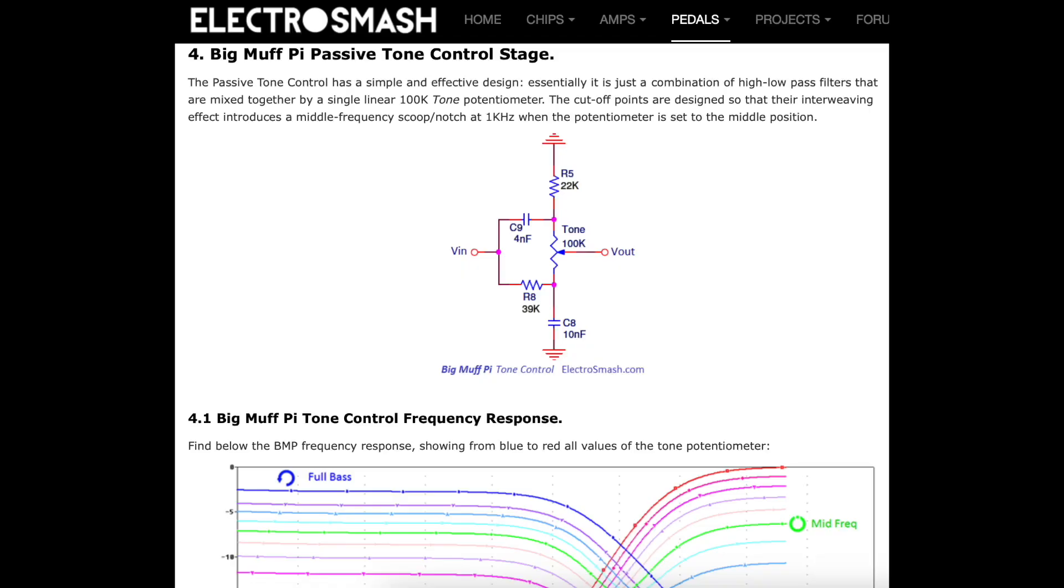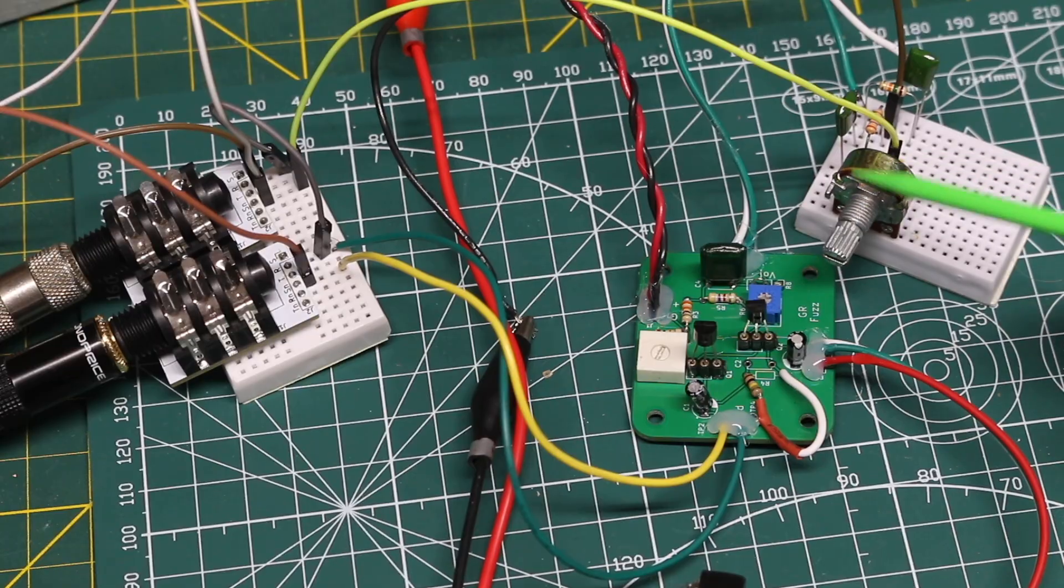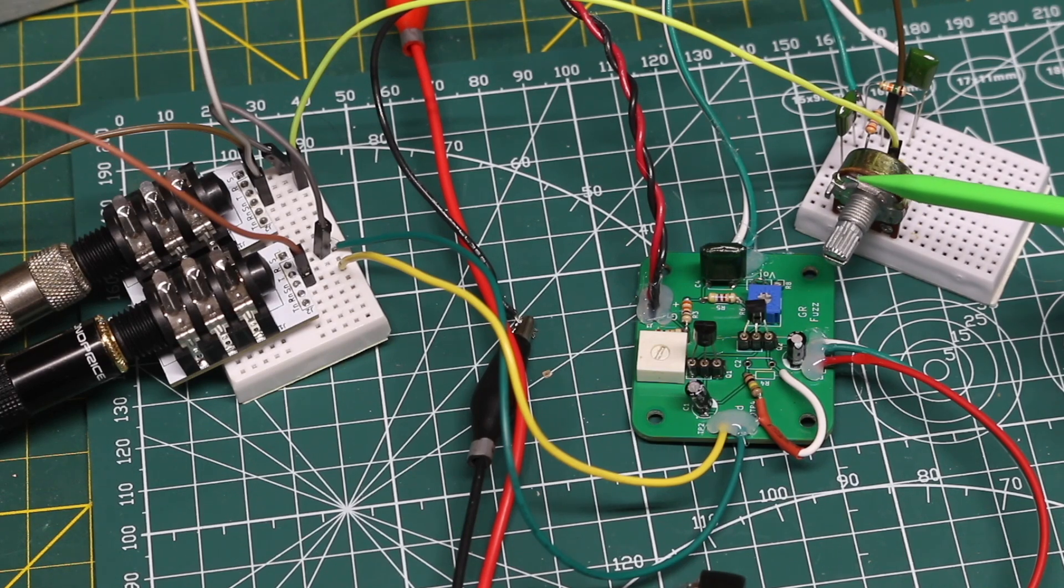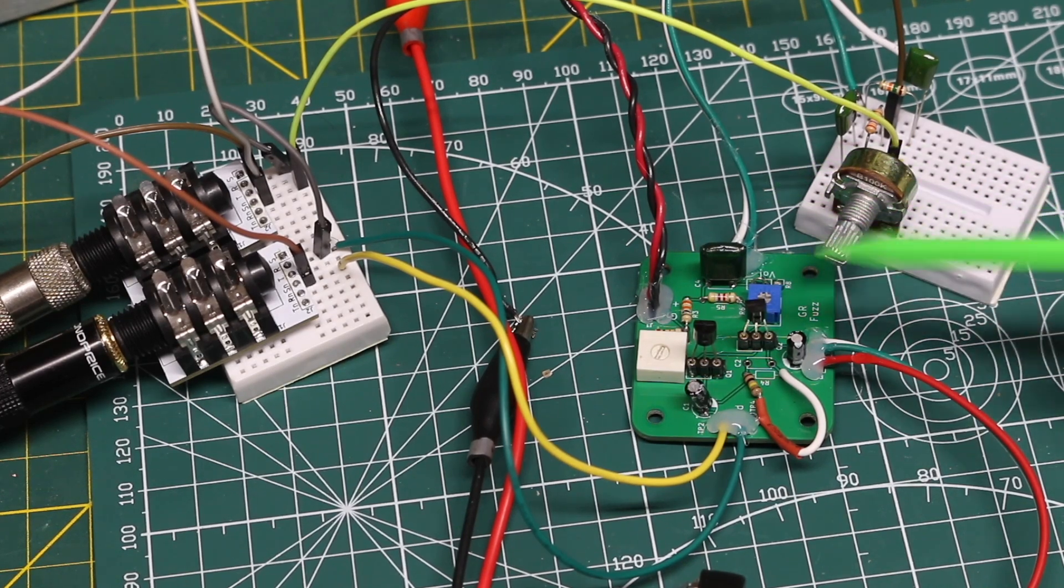This tone control network has been used in other effect pedal circuits, which is where I got the idea, and I just experimented with component values to get the response that sounded right for this circuit. And right now this tone control is set somewhere in the middle, so it's not going to prioritize either bass or treble. It should be more neutral.